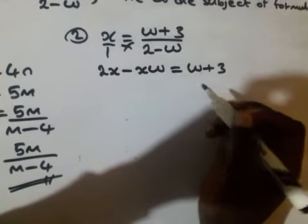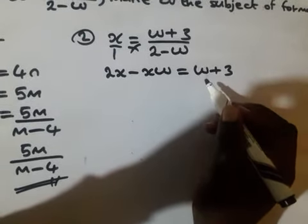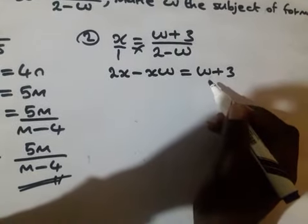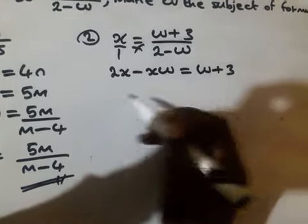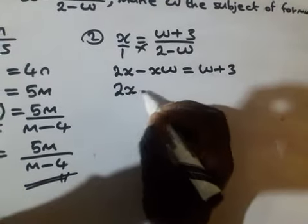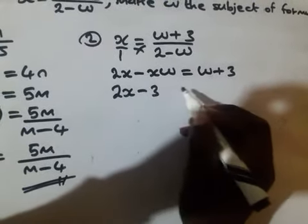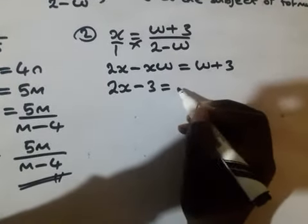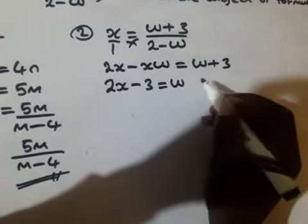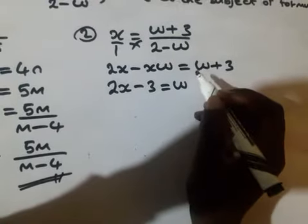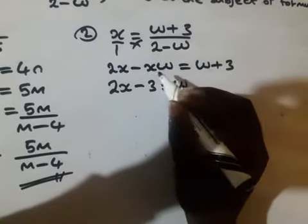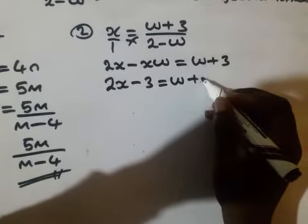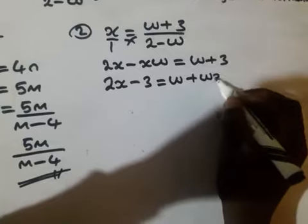Now we have to collect the terms that contain w, because it is the one we are making subject. So this one will be 2x minus 3. So this will come to 2x, which will become negative, which is equal to w, then wx or xw, which will become plus wx.